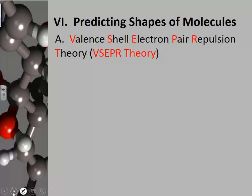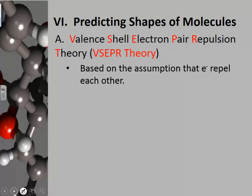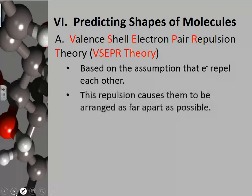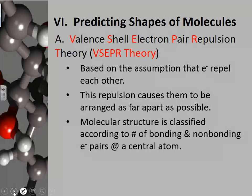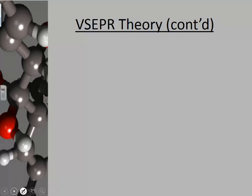Just like the acronym explanation states, the VSEPR theory is based on the assumption that electrons repel each other. This repulsion causes them to be arranged as far apart as possible. Your molecular structure is classified according to the number of bonding and non-bonding electron pairs around your central atom. The geometry of your molecule is classified by the number of bonding and non-bonding electron pairs around the central atom.